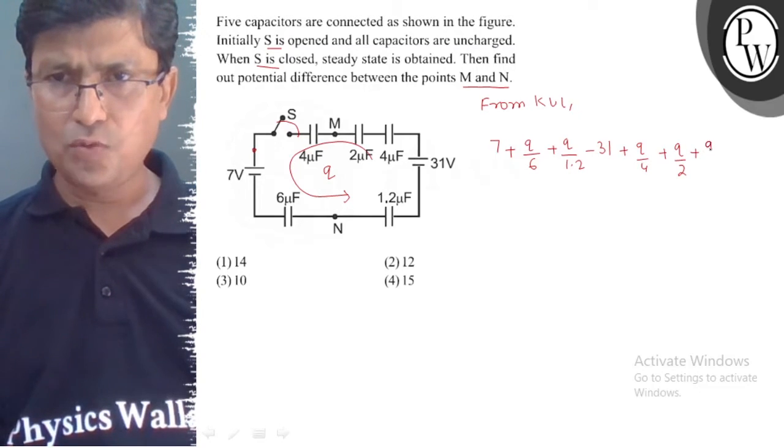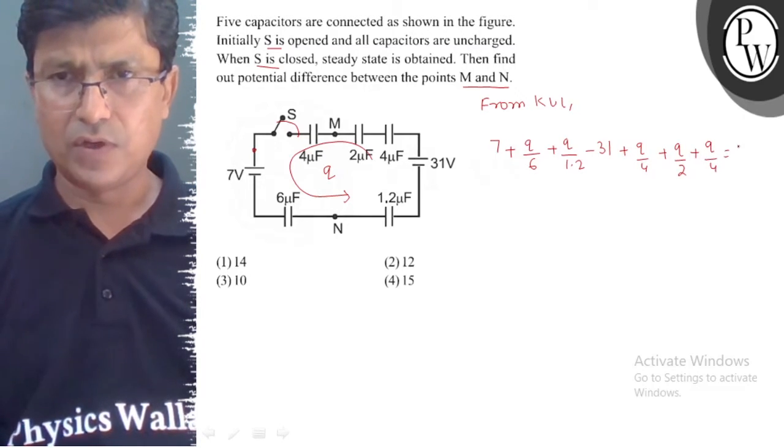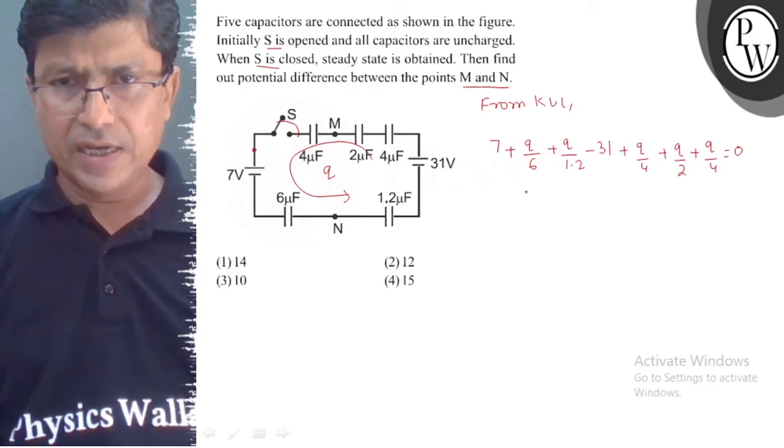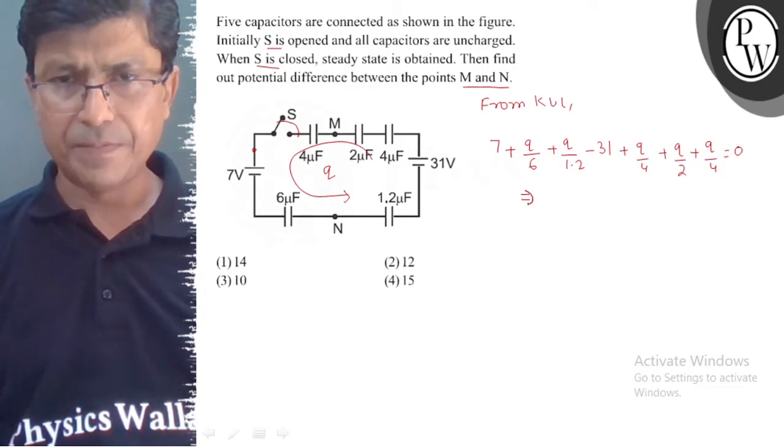plus Q by 4 equals 0. When we simplify this, the value of Q equals 12 microCoulombs.